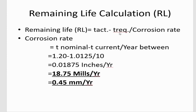Next, we have to calculate the remaining life. To calculate remaining life, we need the actual thickness minus the required thickness, divided by the corrosion rate. First, we must calculate the corrosion rate.